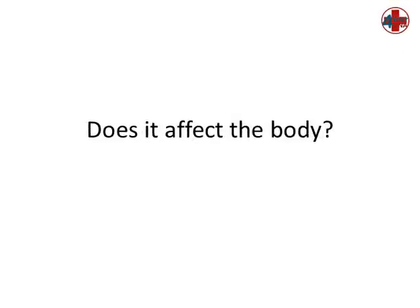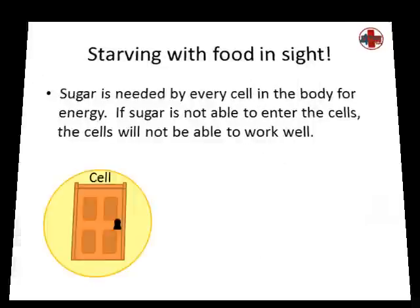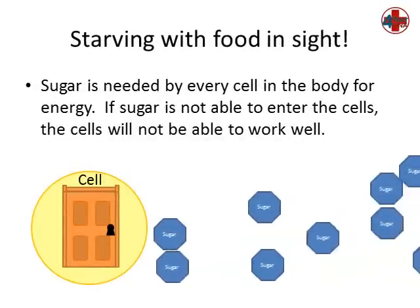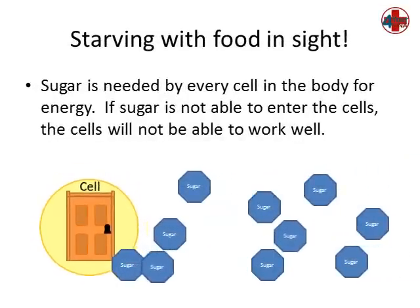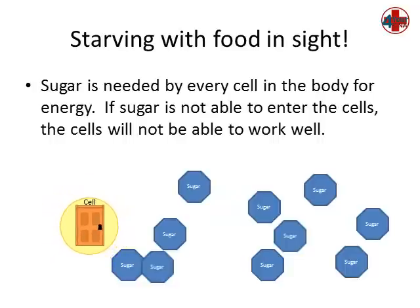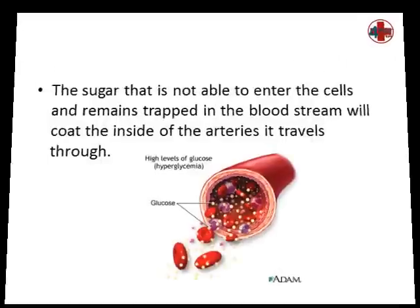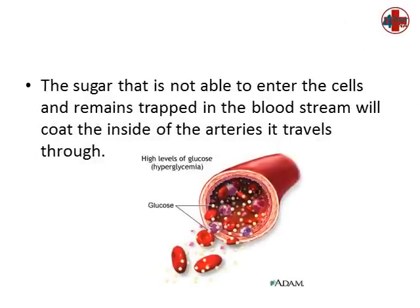Does it affect the body? Sugar is needed by every cell in the body for energy. If sugar is not able to enter the cells, the cells won't be able to work well. If left untreated, diabetes can affect the body in many different ways. The sugar that's not able to enter the cells and remains trapped in the bloodstream will coat the inside of the arteries it travels through.